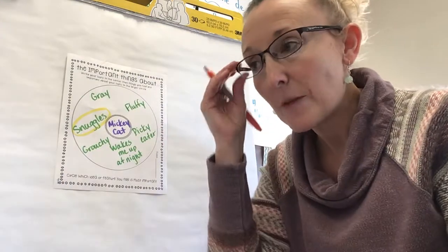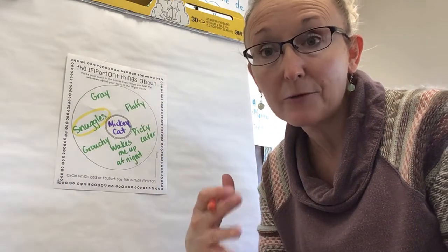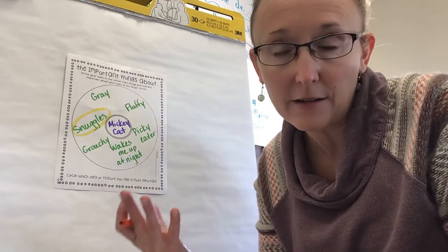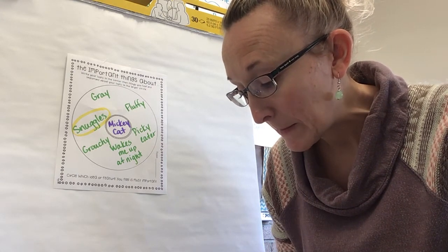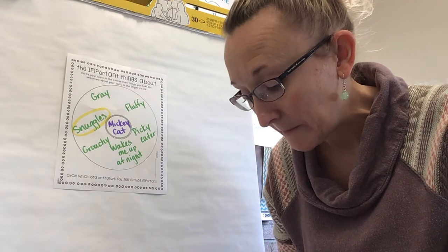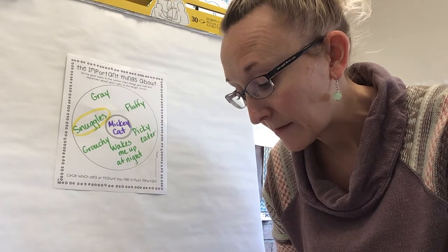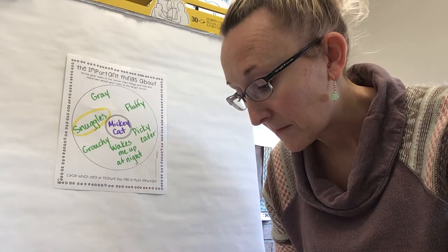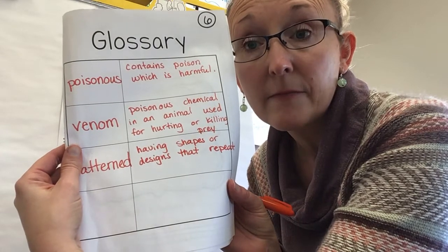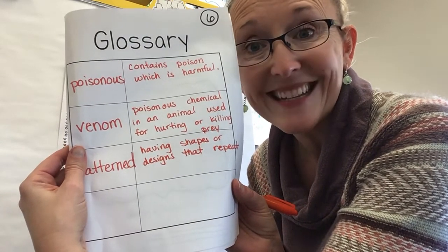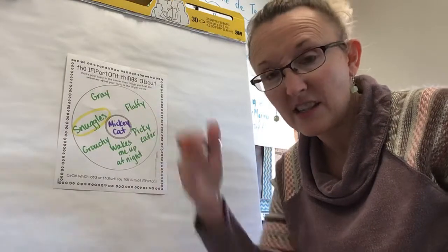Patterned. If something is patterned, that means it has a repetitive design or pattern. I can't use the word 'pattern' in the definition of 'pattern,' so I'm going to change that. I'll write: having shapes or designs that repeat. Like our pattern on our calendar — it repeats. The pattern on my snake repeats. It's a design or shape that happens over and over again.